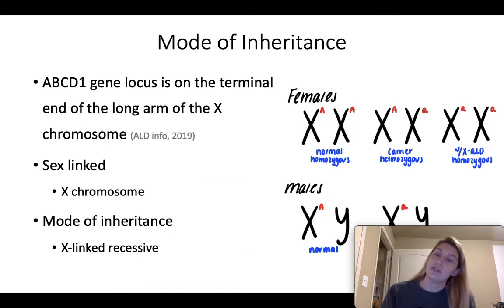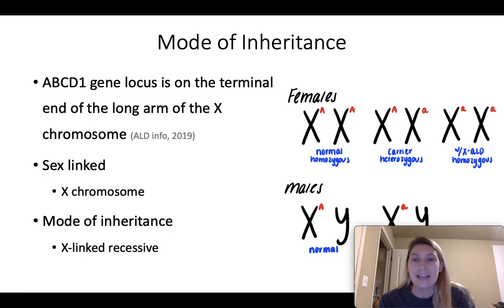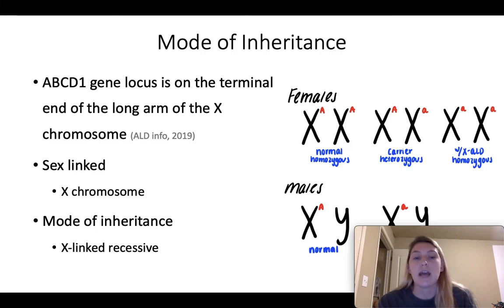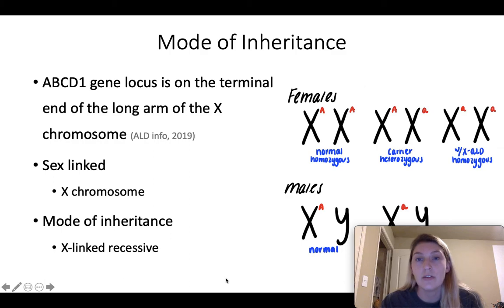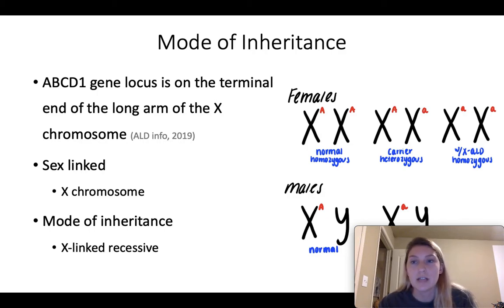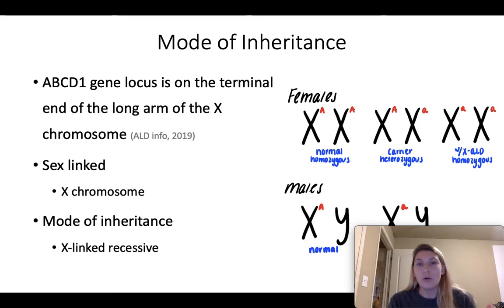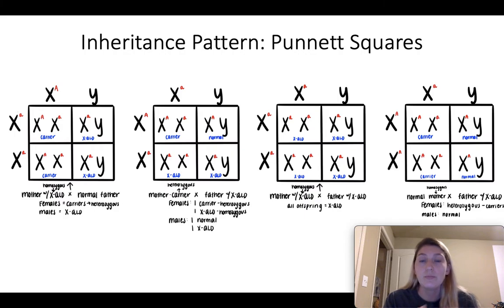Looking at the modes of inheritance: the ABCD1 gene locus is on the X chromosome, so it is sex-linked and its mode of inheritance is X-linked recessive. A normal homozygous female would carry two dominant alleles, a carrier would be heterozygous, and a female with XALD would have two recessive alleles. In males, a dominant allele means normal and a recessive allele means XALD.